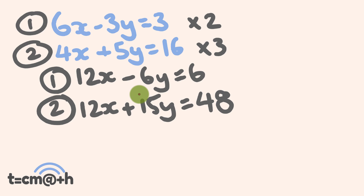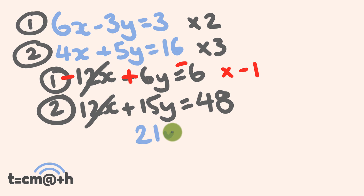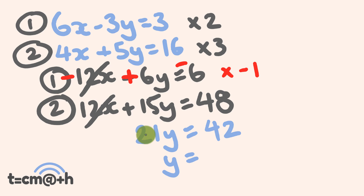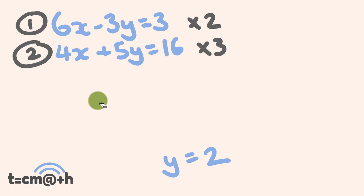So I'm now going to take the smaller one of these off — I'm going to multiply it by negative 1. So this is going to become negative 12x, negative 6y becomes positive 6y, and 6 becomes negative 6. 12x take away 12x — they cancel each other out. 15y plus 6y is 21y and this is equal to 48 subtract 6 which is equal to 42. We have that y is equal to 42 divided by 21 which is equal to 2. So y is equal to 2.